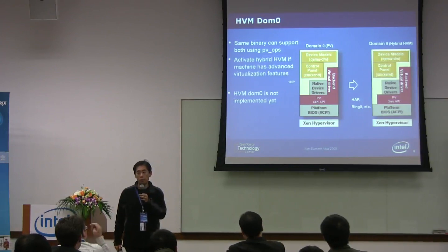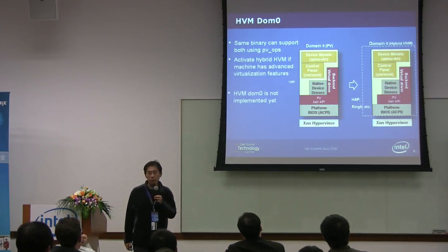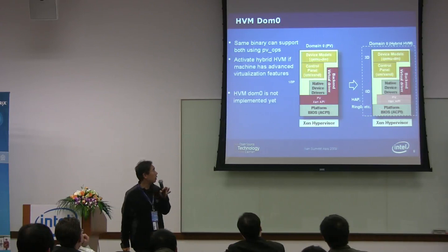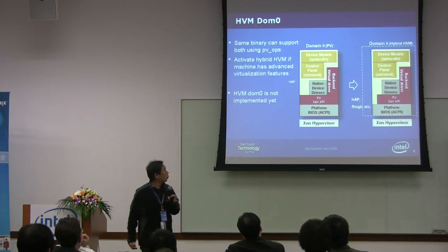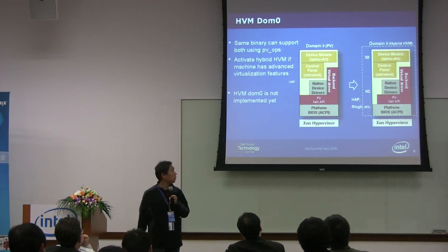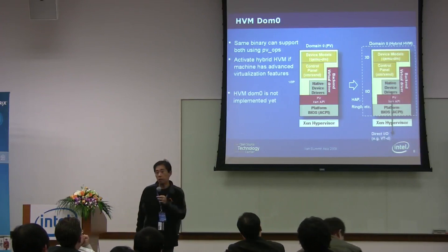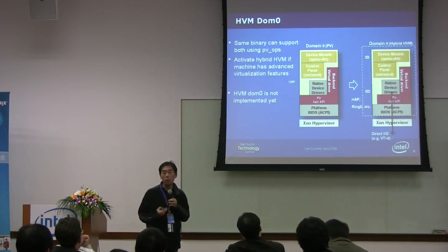Now, we can use hybrid HBM even for DOM zero. With DOM zero, if the hardware has a feature, we can again go into a BT container. This way we get ring zero and ring three, and use the Xen API, and also use BTD IO performance file. This way we can get optimal IO performance as well.